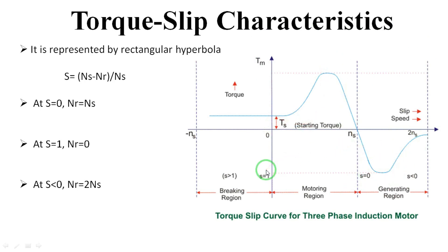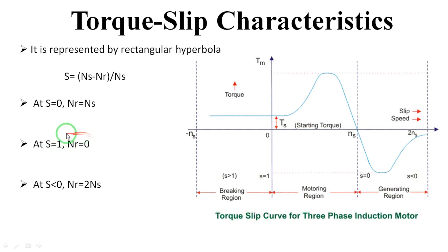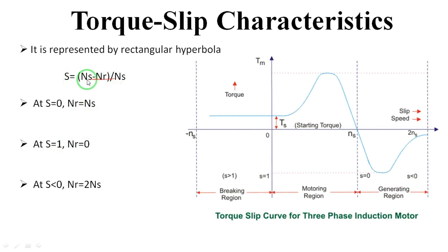Now we will discuss about the motor conditions. Initially the motor speed is at zero — nr means rotor speed, s means slip. When the motor is at rest position, the speed is zero. When the speed is equal to zero, the slip becomes one. When nr is equal to zero, ns minus ns divided by ns gives s equal to one. So slip equal to one means the motor is at rest position.